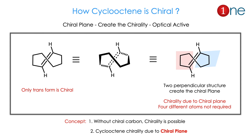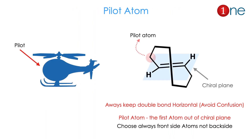When representing cycloalkene, front side bonds are thicker and back side bonds are dotted. The two rings are perpendicular, creating plane chirality. The key concept here is that without a chiral carbon, chirality is still possible. Chirality is created entirely by the chiral plane — four different atoms are not required.